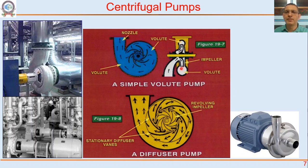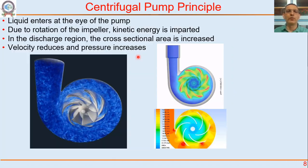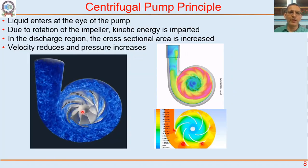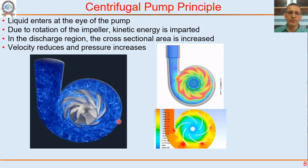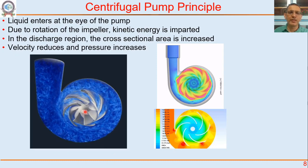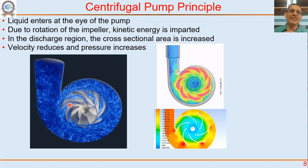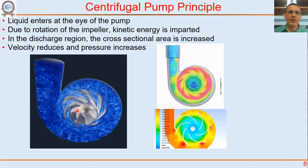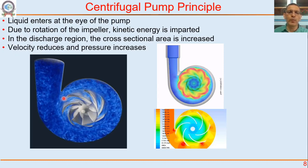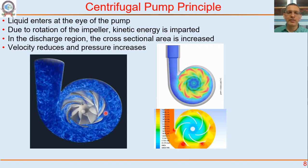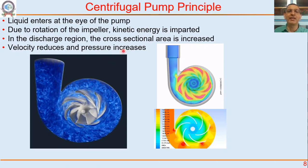The impeller is rotating. Liquid is coming from the eye of the impeller. The rotation of the impeller increases the tangential velocity of the fluid. Tangential velocity here at the center is very small, but at the edge it is 2πRn — that is the tangential velocity imparted. So this tangential velocity is high at the edge. The impeller is imparting kinetic energy to the liquid. What is plotted is contours of velocity — red regions are high velocity, blue regions are low velocity. Velocity is high at the edge of the impeller.